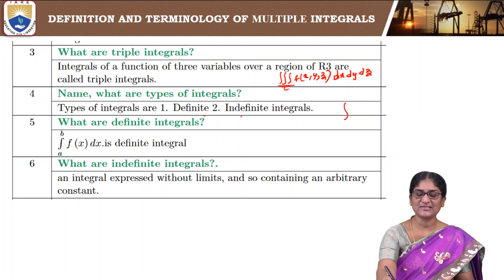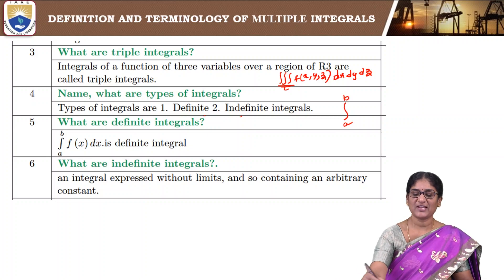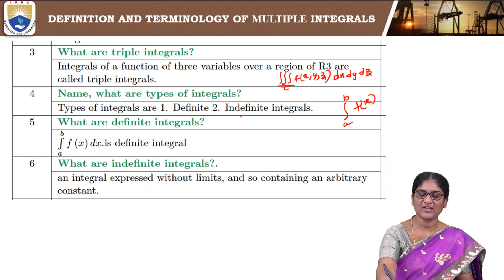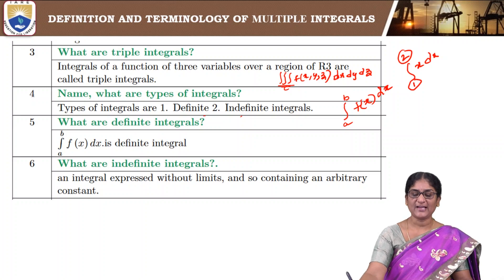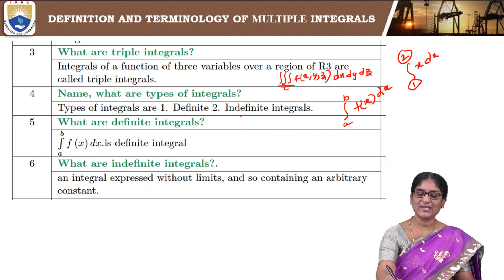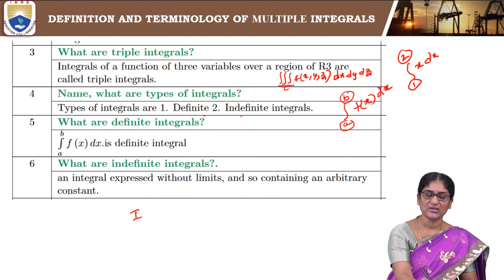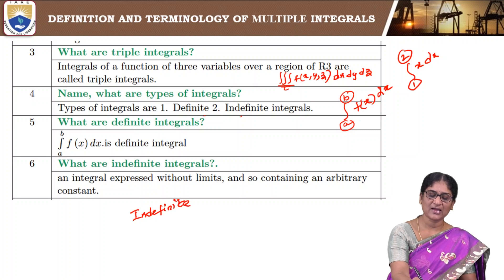An integral is definite if the limits are specified and they are finite values. For example, the integral from a to b of f(x) dx — such as the integral from 1 to 2 of x dx. The values of the limits are fixed and they are constants, so they are called definite integrals.